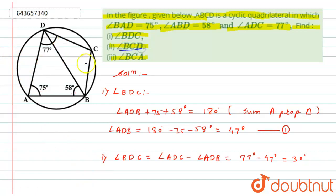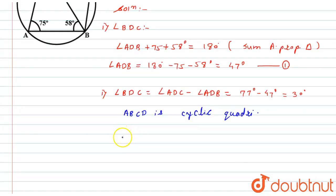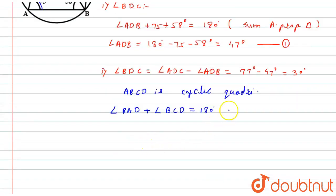Now for the second part, we need to find angle BCD. Since ABCD is a cyclic quadrilateral, the opposite angles are supplementary — their sum equals 180 degrees. So angle BAD plus angle BCD equals 180 degrees.